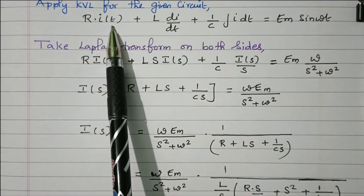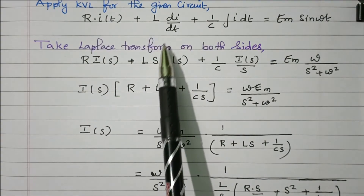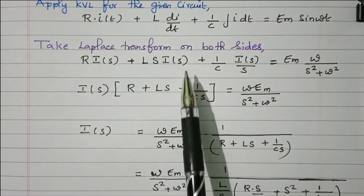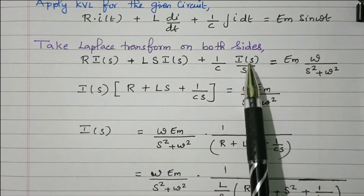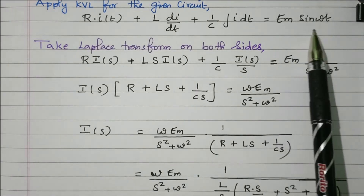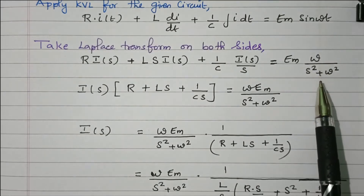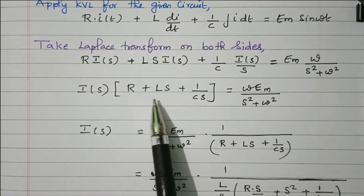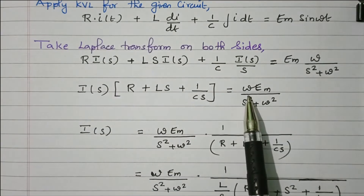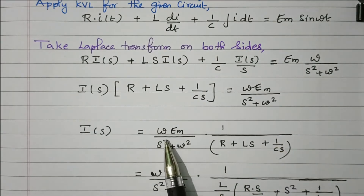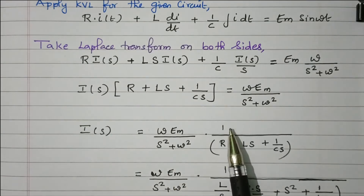R is constant, so the Laplace transform of I(T) is I(S). L is constant, and the Laplace transform of dI/dT is S·I(S) — initial charge is assumed zero. 1/C is constant, and the integral of I dT transforms to I(S)/S. The Laplace of Em sin(ωT) is ω/(S² + ω²). Taking I(S) common gives: I(S)·[R + LS + 1/(CS)] = ωEm/(S² + ω²). Rearranging: I(S) = ωEm / [(S² + ω²)(R + LS + 1/(CS))].